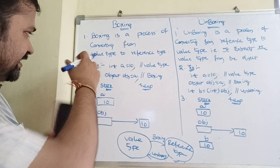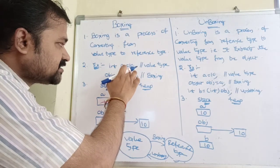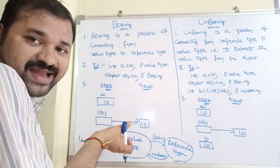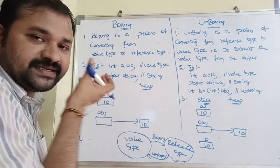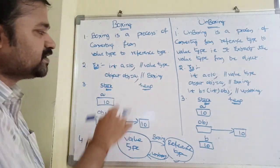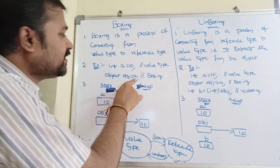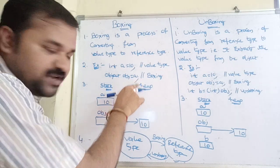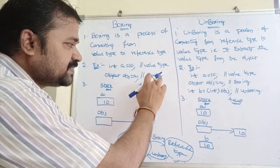Let's see an example. int a = 10 — this is a value type because the variable contains a value. To convert from value type to reference type, we store this value in a reference, which is known as boxing. The best example for a reference type is object, so: object ob = a. Now this 10 will be stored in the object, converting from value type to reference type — this process is boxing.